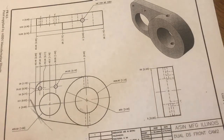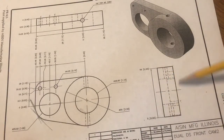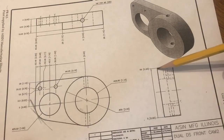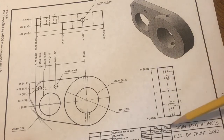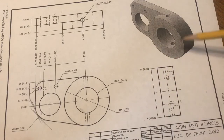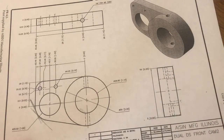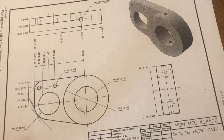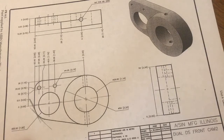Number nine asks what geometric term describes the general shape of that view. If we look at this overall, it is a rectangle shape. So rectangle is the answer for number nine.